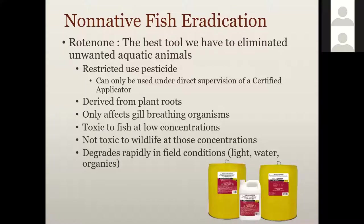The best way we have to eradicate non-native fish is through the use of rotenone. It's a restricted-use pesticide that can only be used by a certified pesticide applicator, and it's really the best tool we have to completely eliminate unwanted aquatic animals. We can do electrofishing or other mechanical removal, but we can never be sure we've removed every individual. Rotenone is derived from the roots of plants from the Amazon. It only affects gill-breathing organisms and is toxic to fish at low concentrations. It degrades rapidly in the presence of light, water, and organic material.